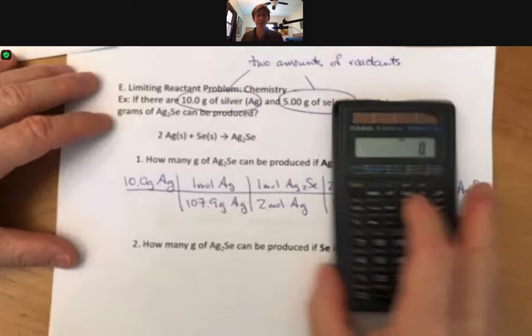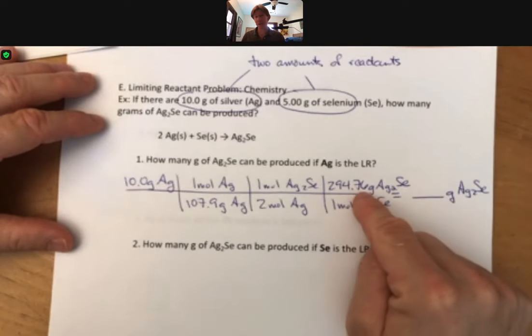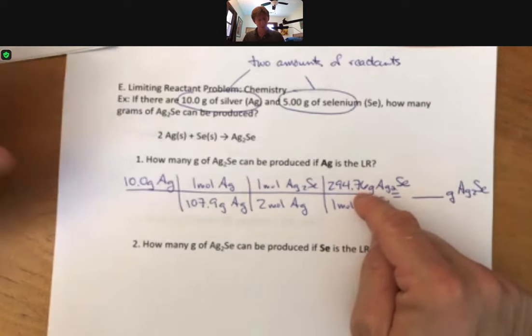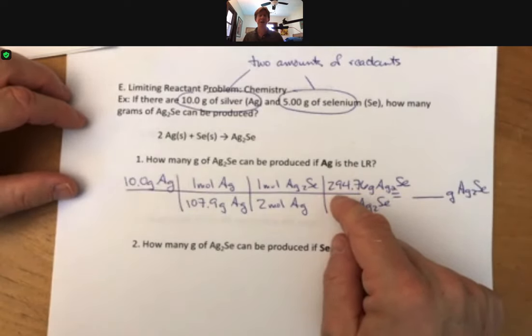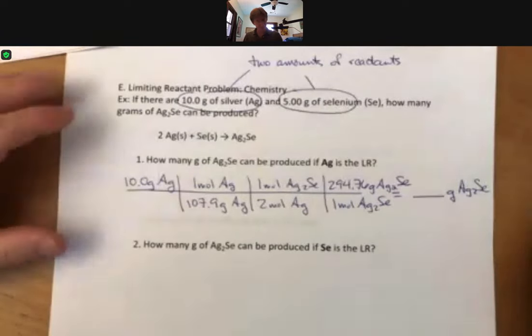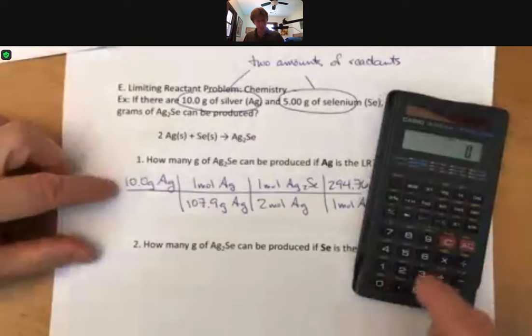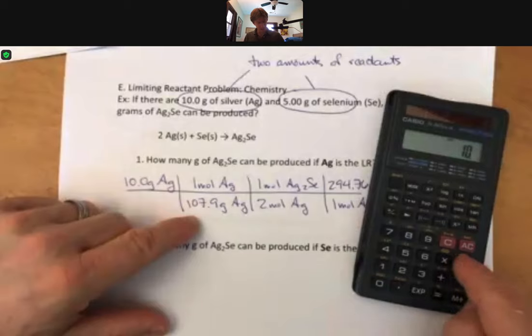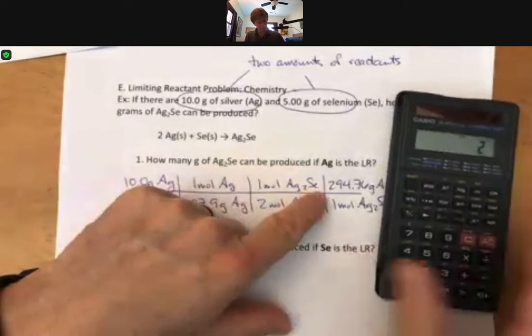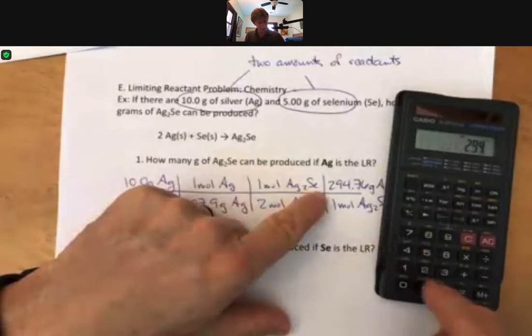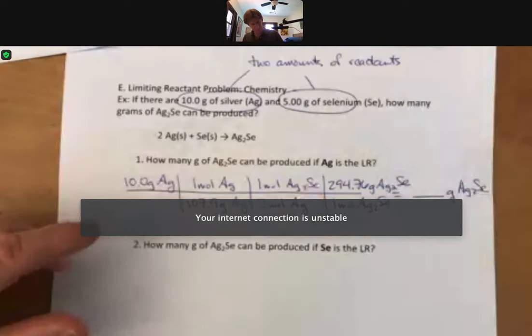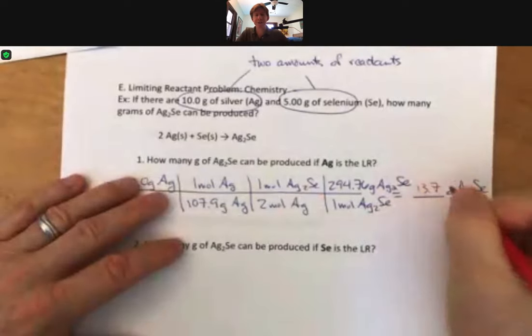Remember, I do sometimes, when there's two decimal places, I sometimes do keep five sig figs for these. If you keep four, that's fine. Please do not round to the nearest gram though. That will sometimes mean that you missed the answer in the online homework. Let's see what we got here. We got 10 grams divided by 107.9 divided by two times 294.76. I get 13.7 grams of silver selenide.